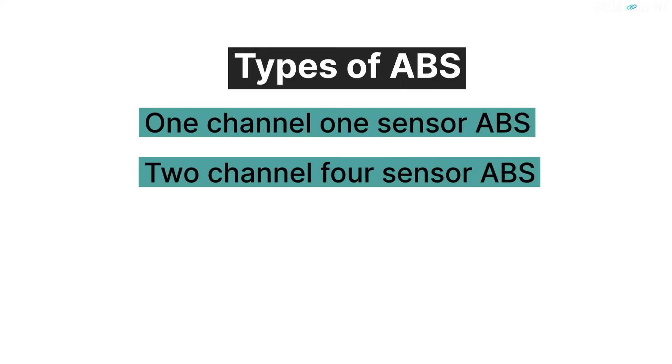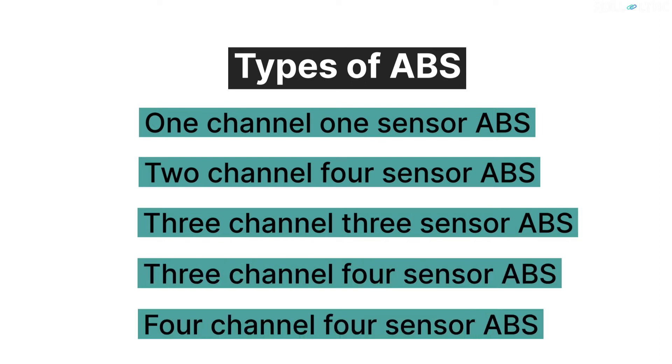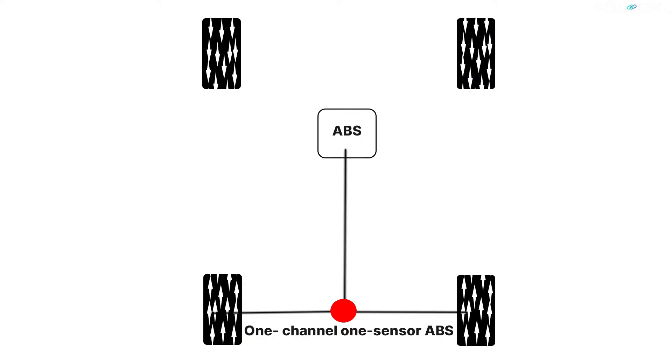Based on the number of speed sensors used and the number of valves that can be individually controlled, ABS are of different types: 1 channel 1 sensor ABS, 2 channel 4 sensor ABS, 3 channel 3 sensor ABS, 3 channel 4 sensor ABS, and 4 channel 4 sensor ABS. In the 1 channel 1 sensor ABS, there is a sensor located on the rear axle and a valve for controlling the braking on the rear wheels. If any of the rear wheels lock, the brake pressure gets released for both the rear wheels. This in turn reduces the effectiveness of braking. This type of ABS is usually used in pickup trucks and SUVs equipped with only rear wheel ABS.